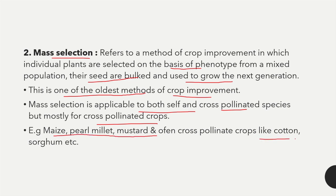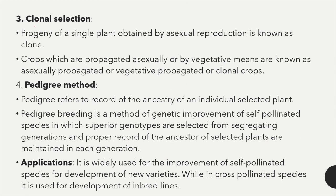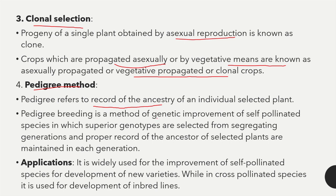Third is clonal selection. The progeny of a single plant obtained by asexual reproduction is known as a clone. Crops propagated asexually or by vegetative means are known as clonal crops. The pedigree method refers to a record of the ancestry of selected plants. Pedigree breeding is a method of genetic improvement of self-pollinated species in which superior genotypes are selected from the segregating generation and records of ancestors are maintained in each generation.